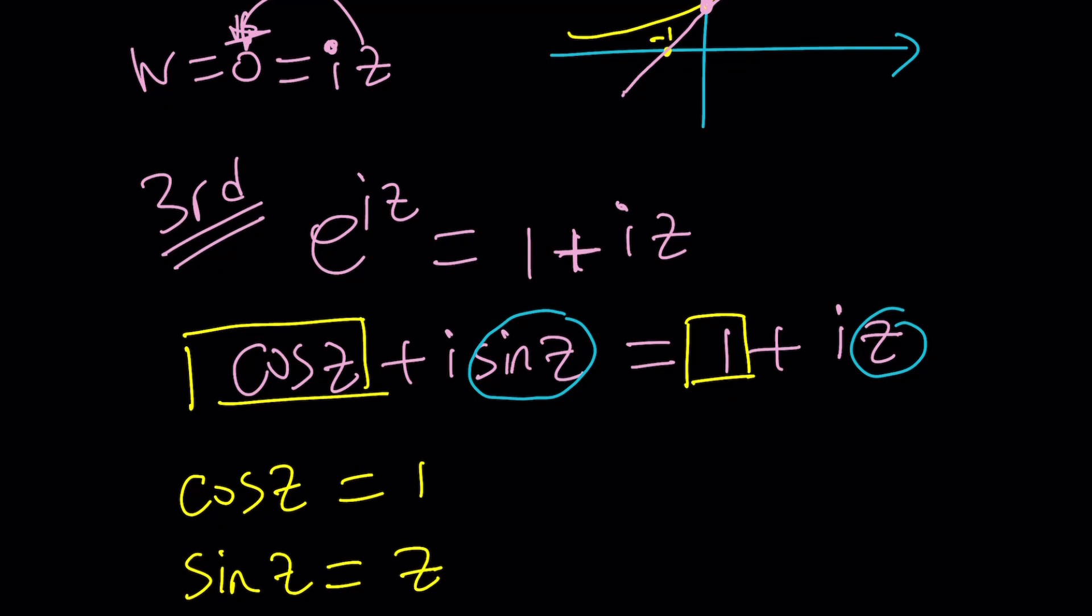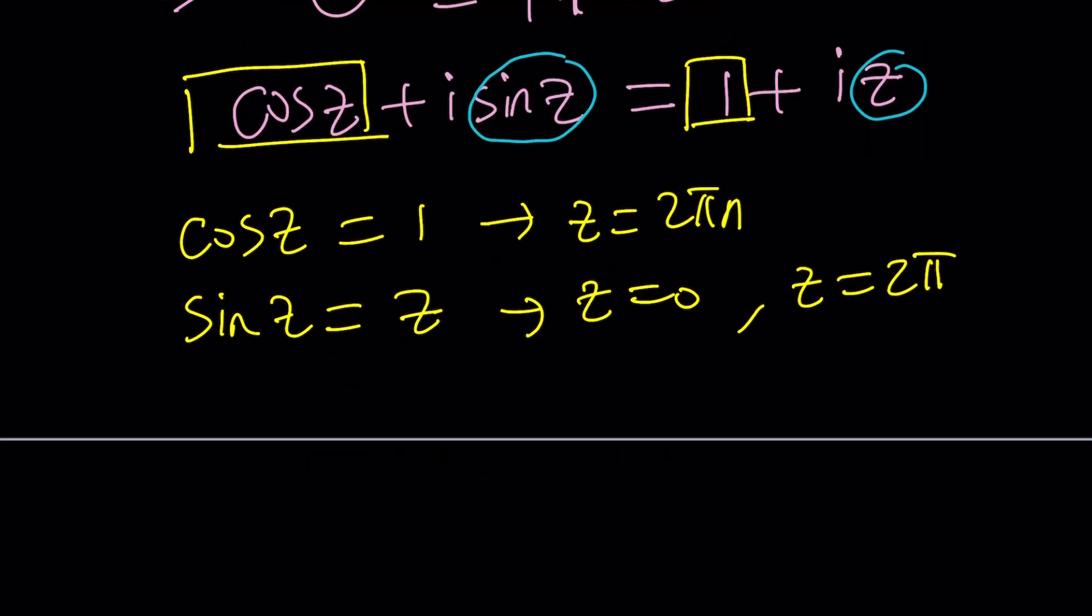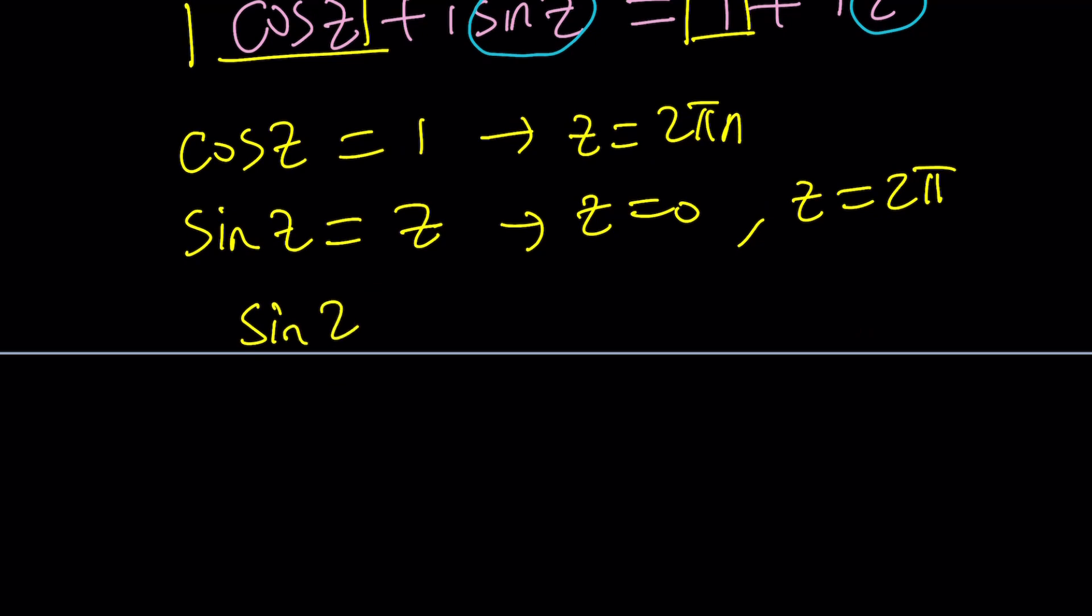Now from here we get the following. Cosine z equals 1 and sine z equals z. That's a system. You got to be careful. And from the first equation I get basically multiples of 2 pi. So it's kind of like z equals 2 pi n where n is an integer. And from the second equation if n is equal to 0 I get 0. 0 satisfies the first equation and the second one. But if n is equal to 1 I get z equals 2 pi. But sine of 2 pi does not equal 2 pi. So this solution and everything else is not going to work. The only thing that works is going to be z equals 0.